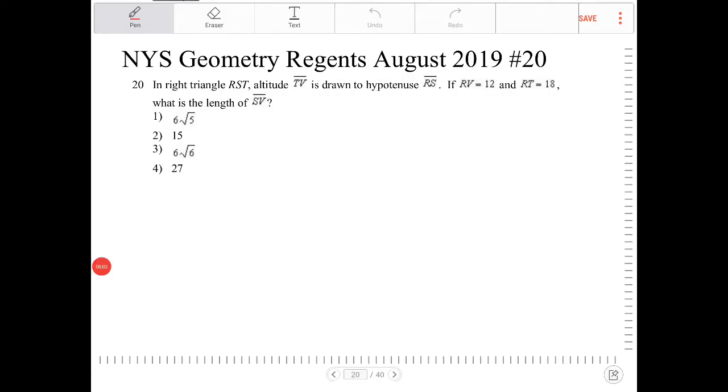In right triangle RST, altitude TV is drawn to hypotenuse RS.